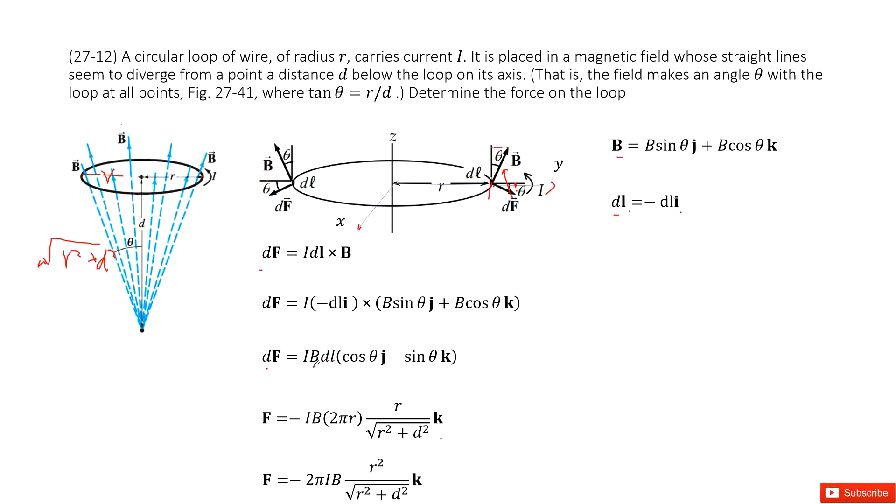And then we do the integral for l. So this whole loop should be 2 pi r, the length for the whole loop. We reorganize it and get the answer there. Thank you.